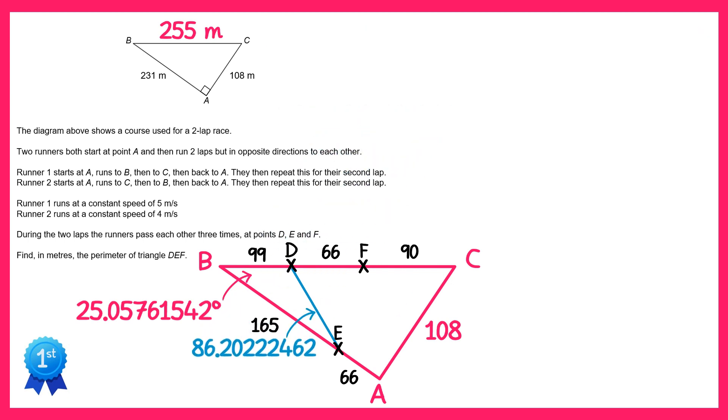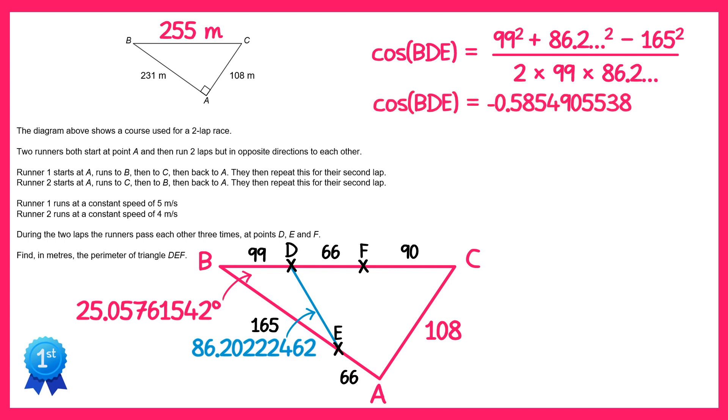Now next we're going to find the angle at the top of this triangle BDE. We're going to use the cosine rule again and this time cos of BDE will equal 99 squared plus 86.2 something squared take away 165 squared divided by 2 times 99 times 86.2 and so on. Now if you work out this right hand side you get this and to find angle BDE you do inverse cos and you end up with this. So it's 125.8 and so on degrees.